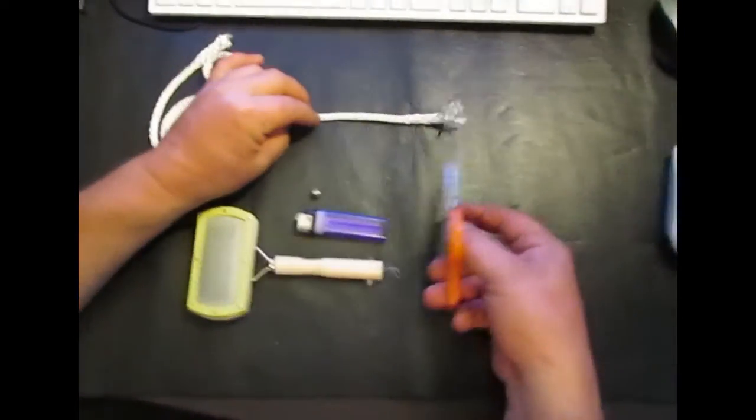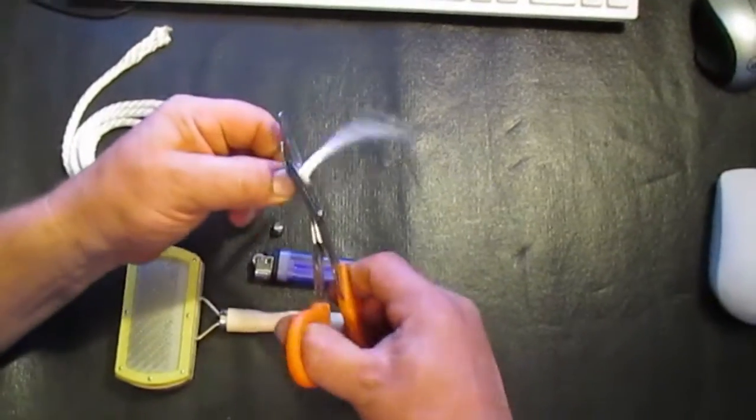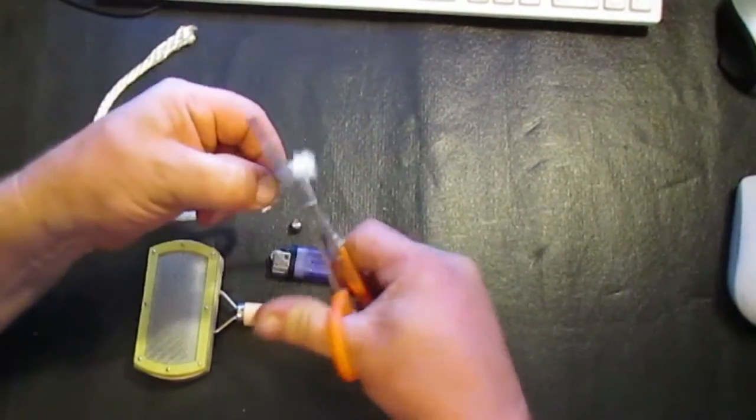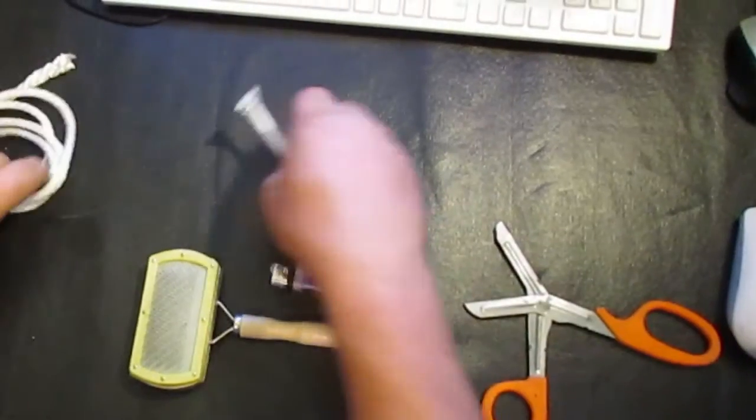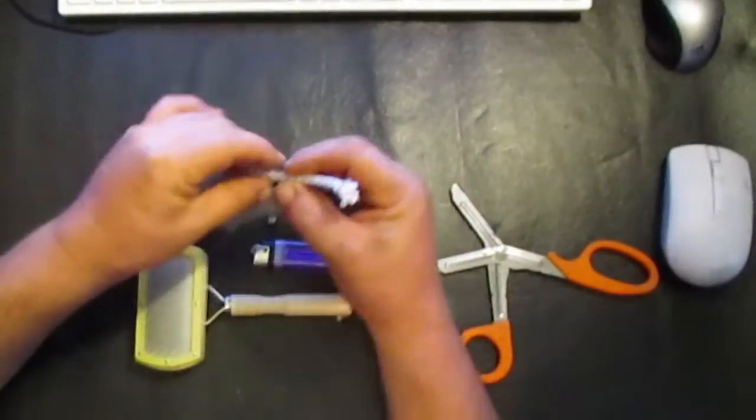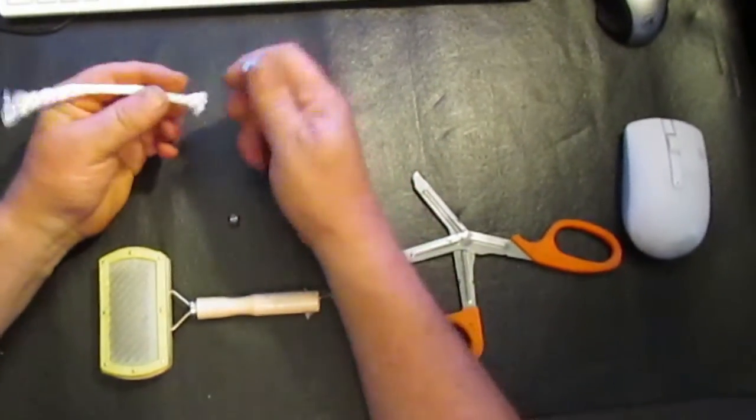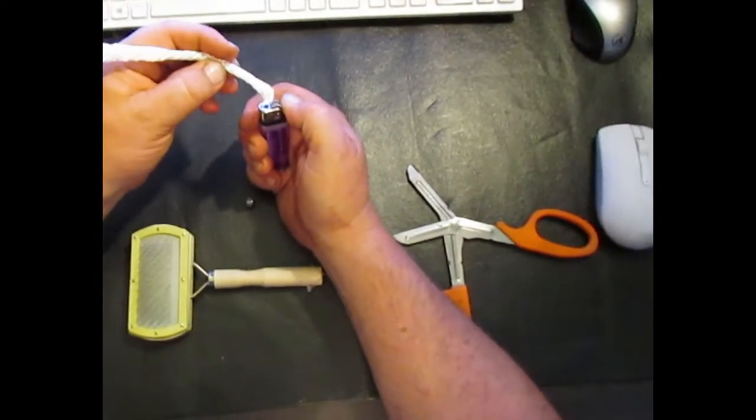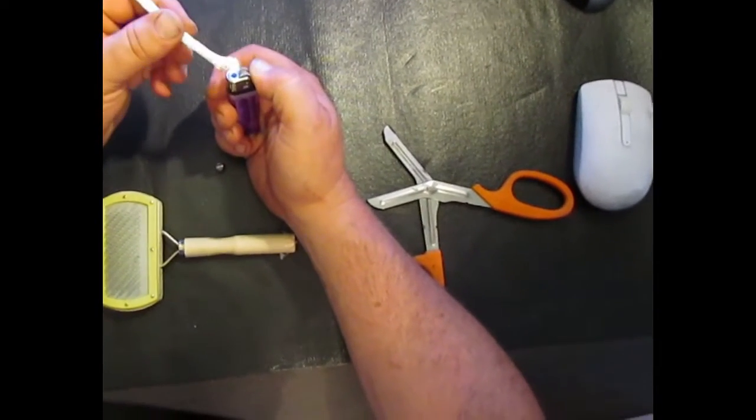You're going to cut it about six inches long. You can use any scissors you want. I'm just using these because they cut really well on that stuff. So I'm going to need that little itty bitty piece and we're going to heat that little piece up with a lighter.